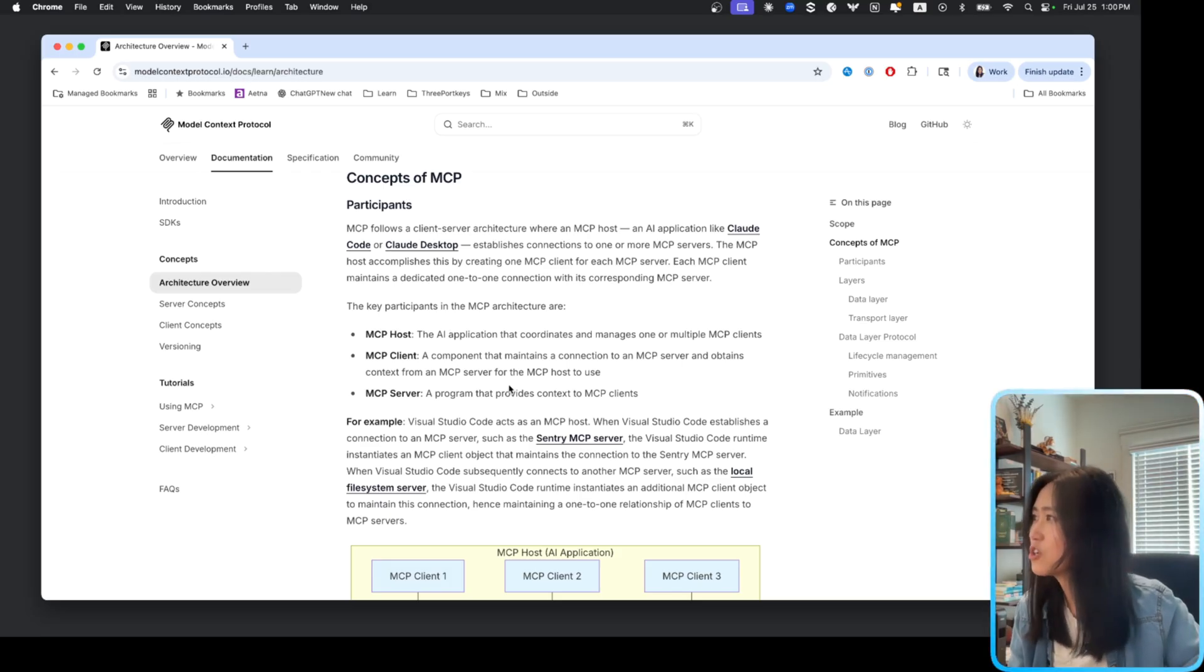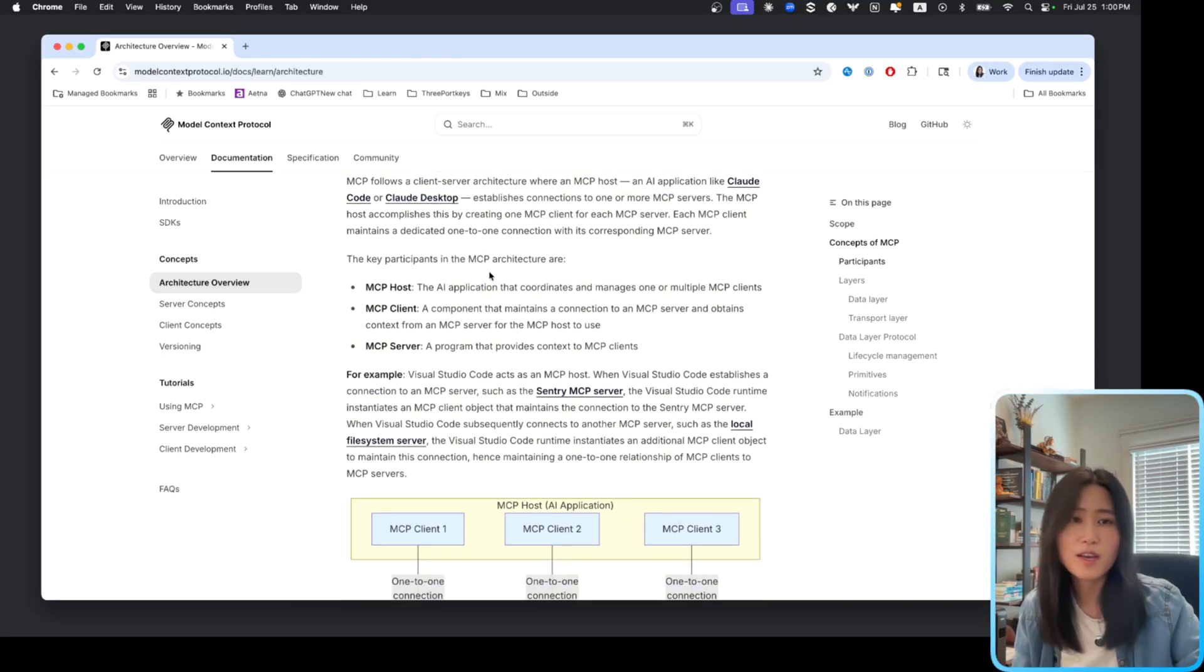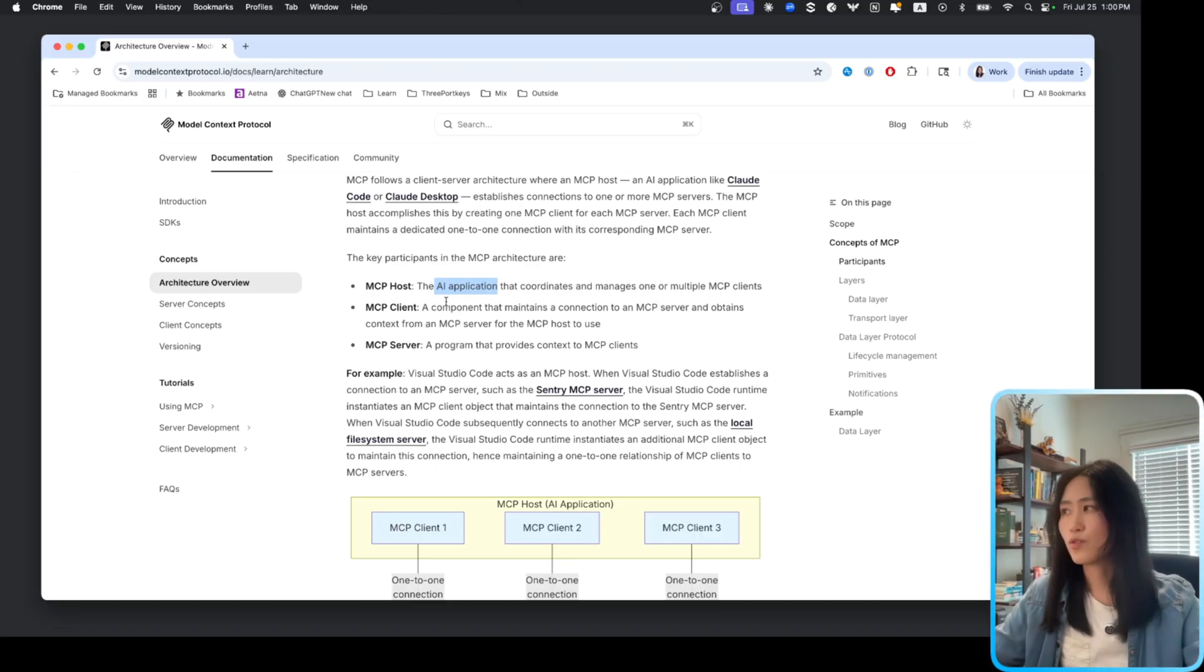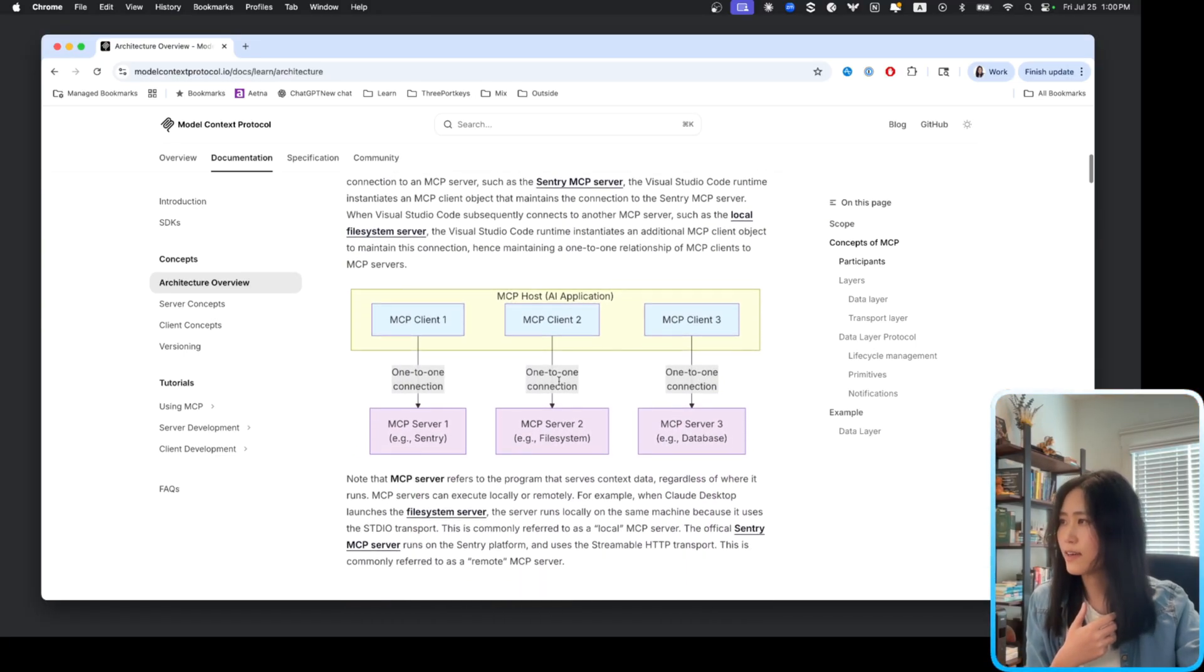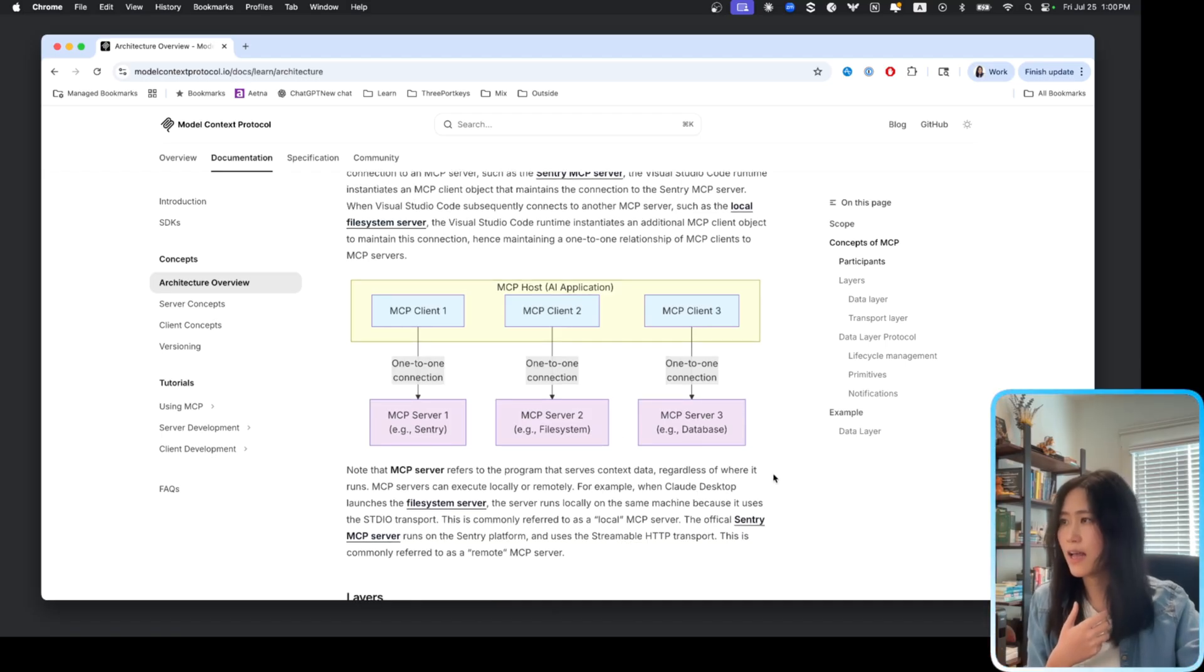If we look at the documentation and the key participants of MCP architecture, you can see the MCP host is the AI application. Okay, that's our frontend and backend. MCP client is a component that maintains connection with MCP server. That doesn't help. MCP server is a program that provides context to MCP client. And if we look down here, you can see MCP server can live outside of MCP host. However, MCP client lives inside of the MCP host. Besides the term MCP client, client gives me the feeling that maybe it's connected to frontend.